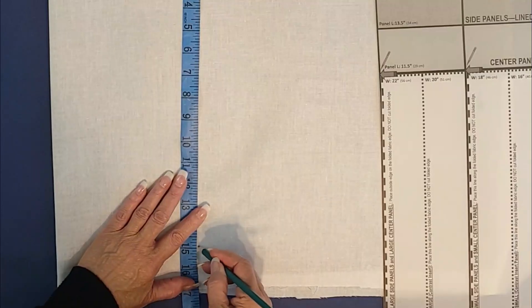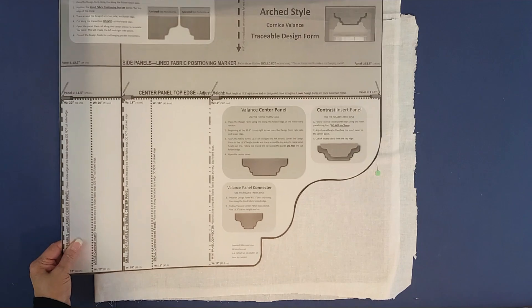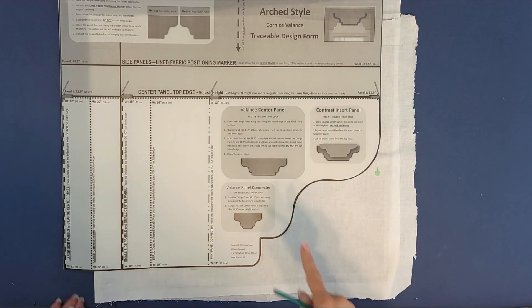Pull out your tape measure. Measure down from your top line to your desired length minus 15 inches. That will be the positioning for the lower edge of the design form.